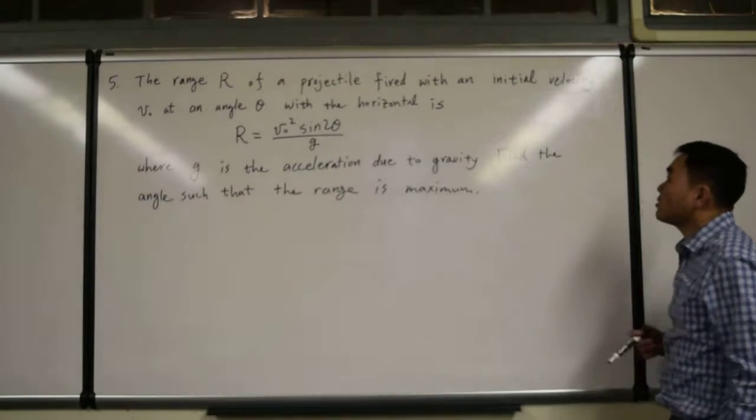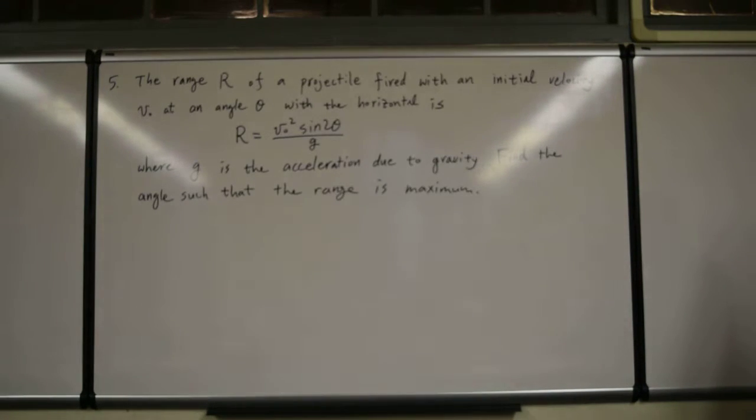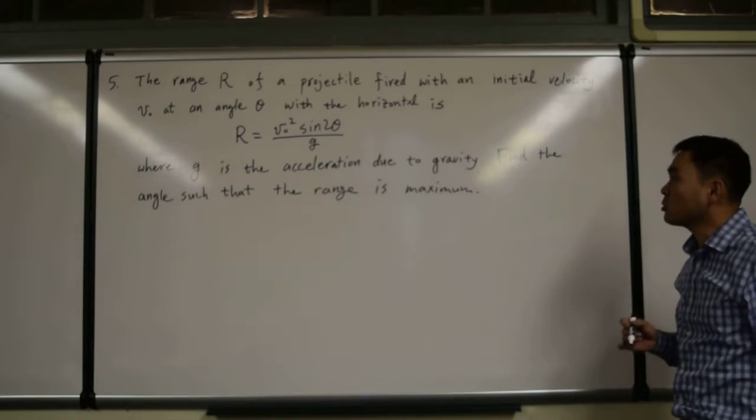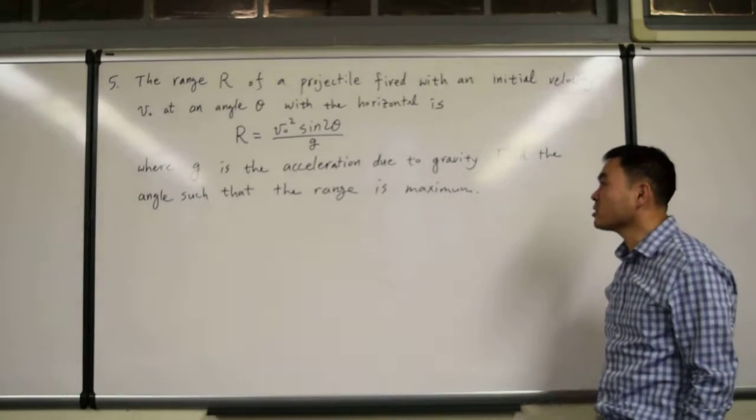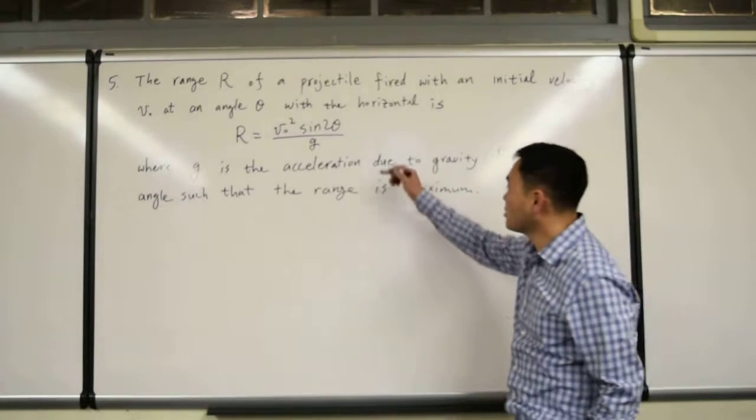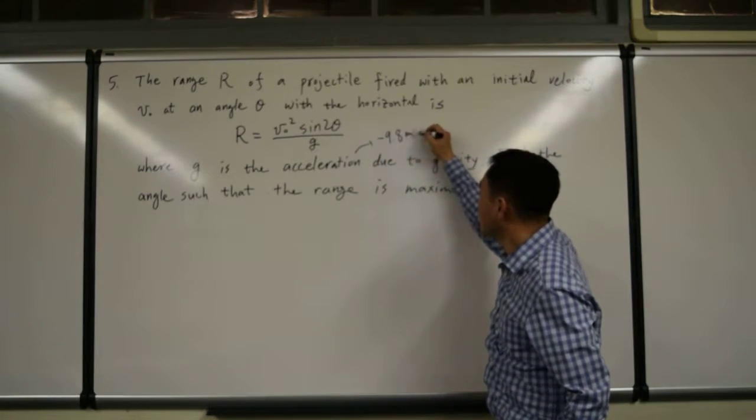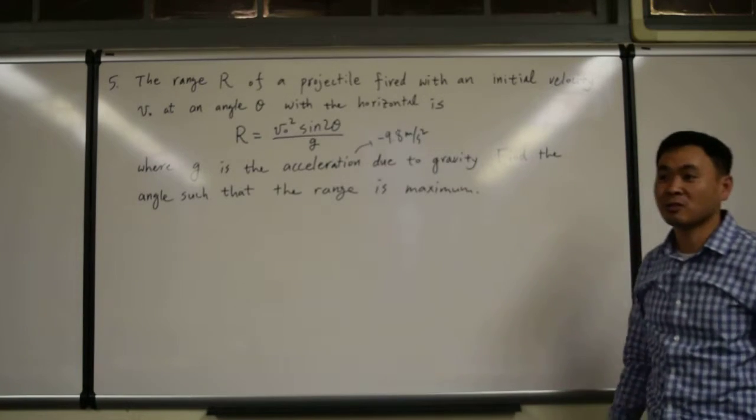And the range R of a projectile fired with an initial velocity v-naught at an angle theta with the horizontal, it is R equals v-naught squared sine 2 theta over g. Where g is acceleration, and if you know what this is, this is negative 9.8 meters per second squared. That's from physics.